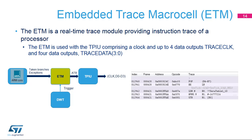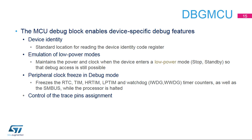Two types of timestamps are supported by the ITM unit: local timestamping, which indicates the relative time between two consecutive local timestamp packets, and global timestamping. The global timestamping comes from a dedicated 48-bit counter also used by the ETM unit.